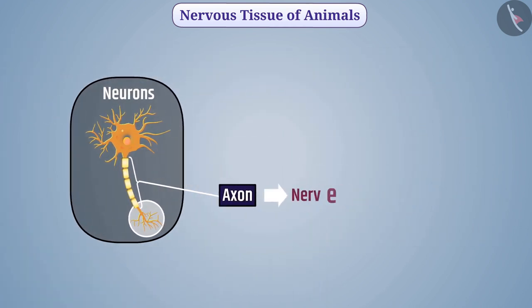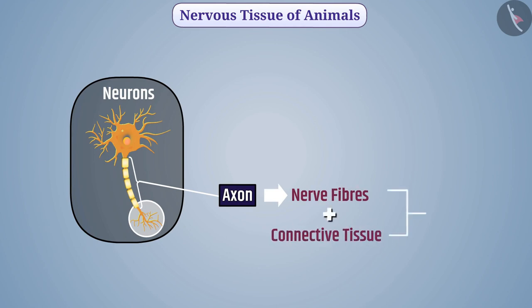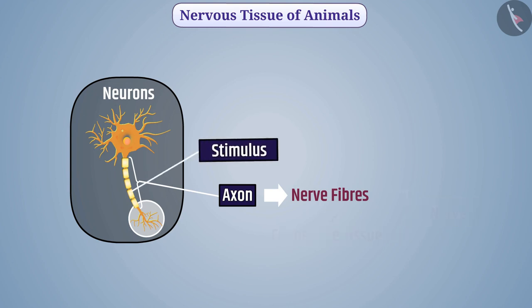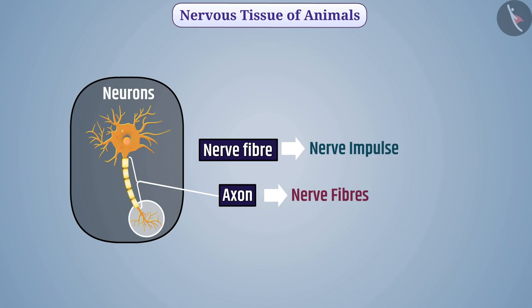Axons are also called nerve fibers. Many nerve fibers bound together by connective tissue form a nerve. The stimulus that is passed through a nerve fiber is called a nerve impulse.